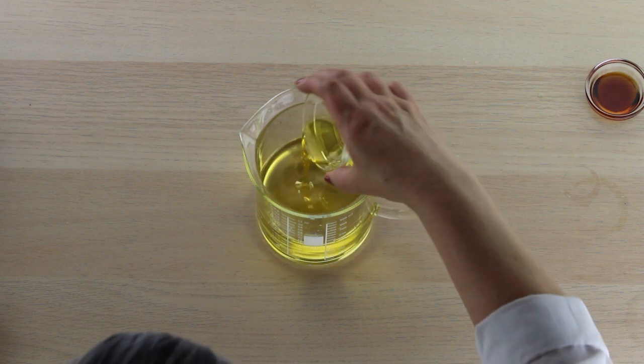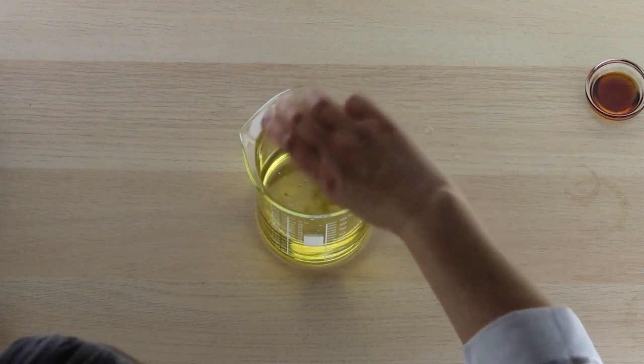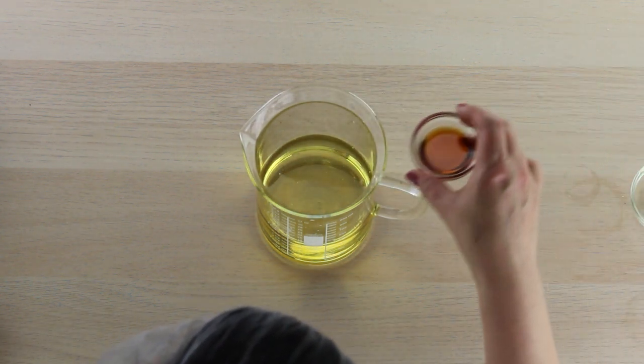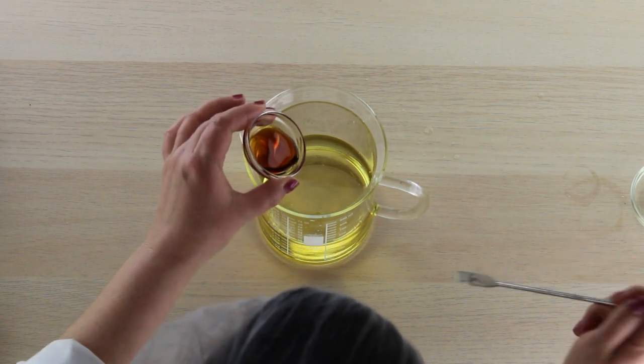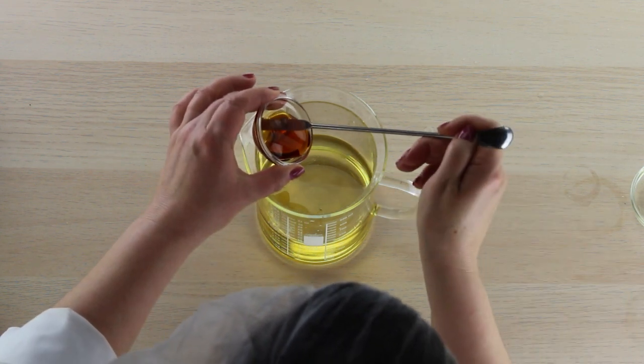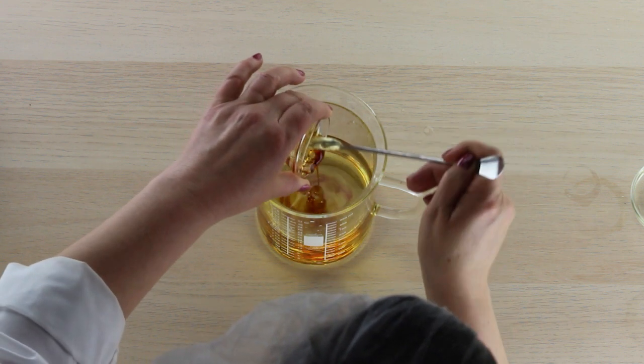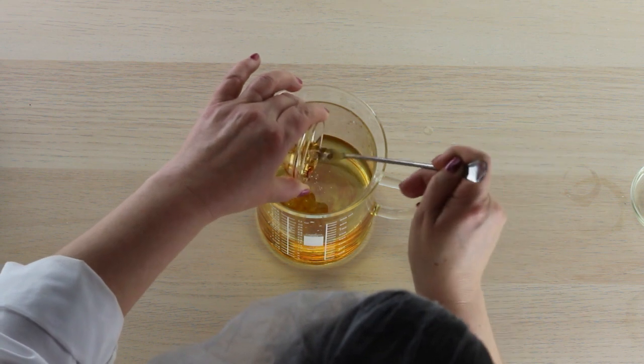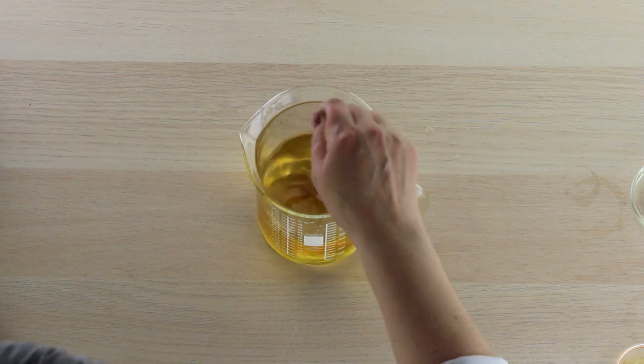We're just going to pour that right in there. That's, like I said, just to give it that sweet almond cherry cake aroma, since I'm going to be using this every day as my new cleanser. And then of course, vitamin E is a great antioxidant and it helps prevent your oil blend from going rancid, so it'll keep longer. Just add those in there and mix it up.